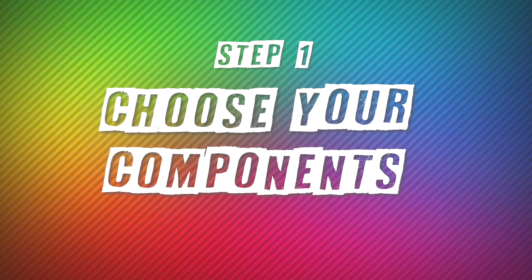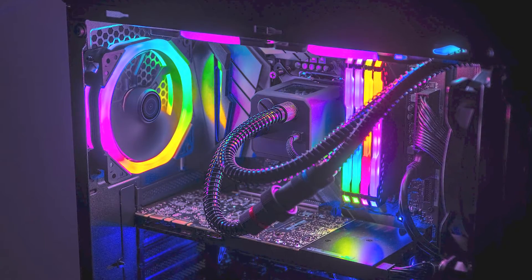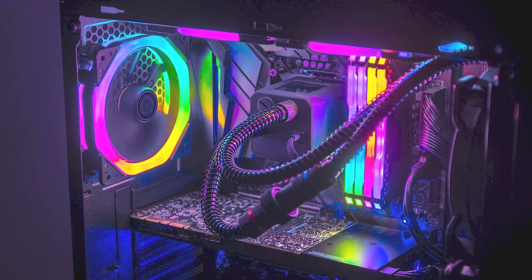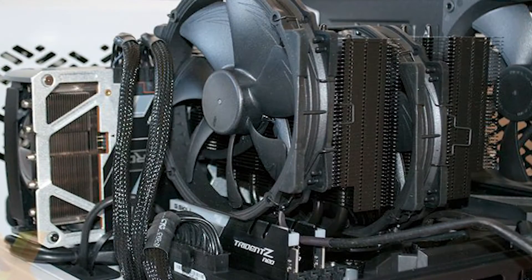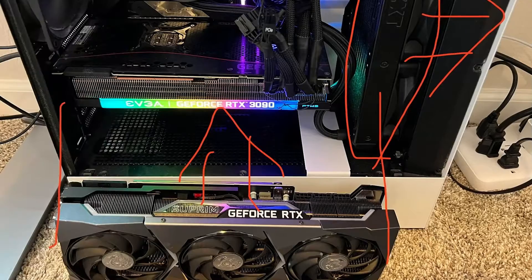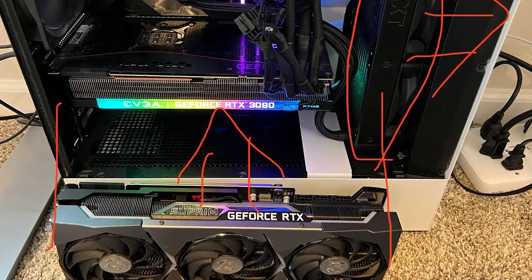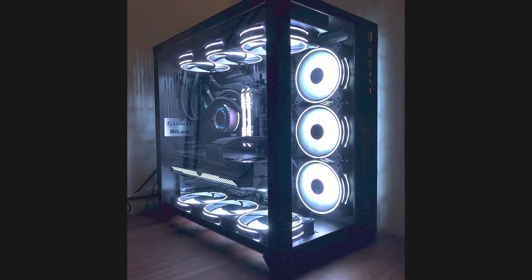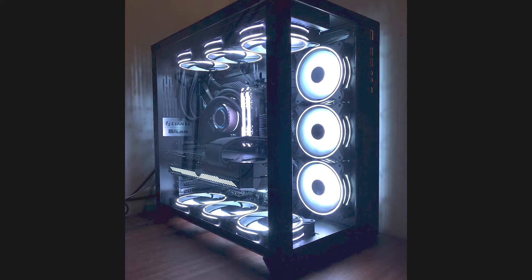Step number one: choose your components first — the case comes last. It's easy to look at the case as the thing that holds all the components together, so you probably think you should choose the case first. No. Because it's easy to fall into a trap where your cooler doesn't fit the case or your graphics card is way too long. By choosing your components first you get the performance you want and you make sure that the case fits those components.